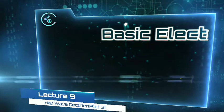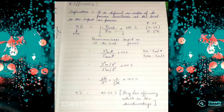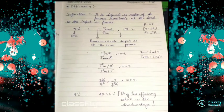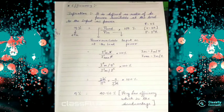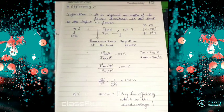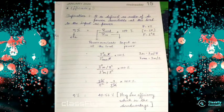Today is lecture 9 of basic electronics with the topic half wave rectifier part 3. Let's begin with today's lecture. Today we will learn about half wave rectifier's efficiency and PIV, that is the peak inverse voltage.